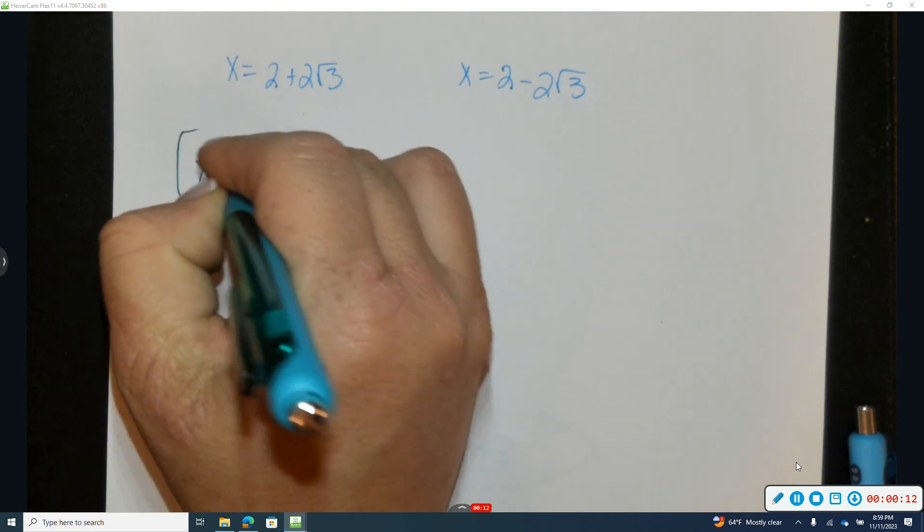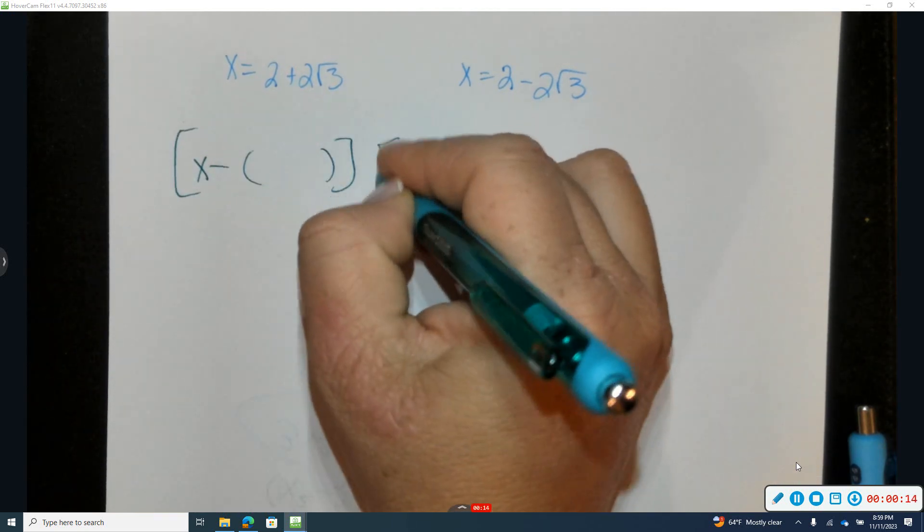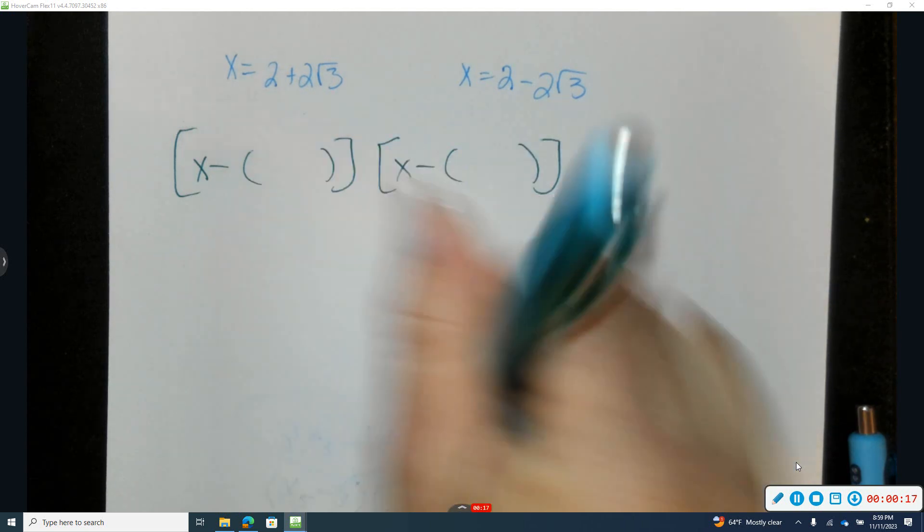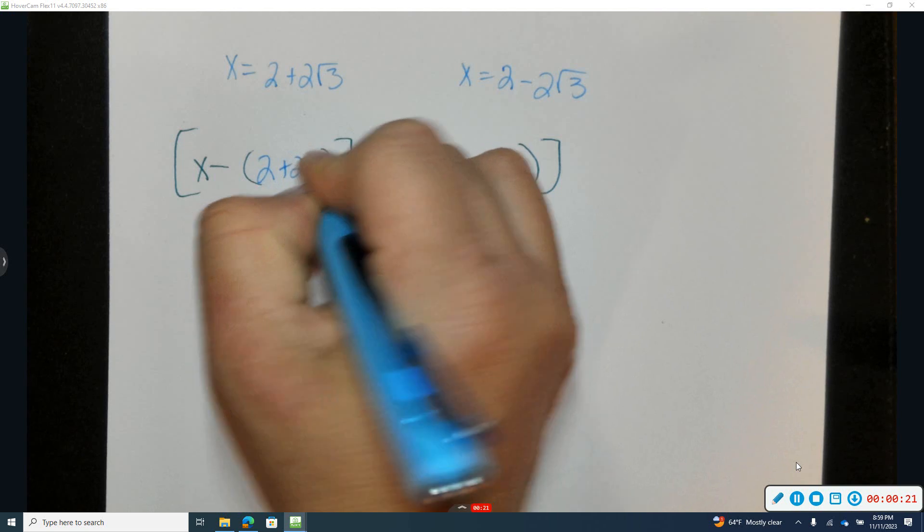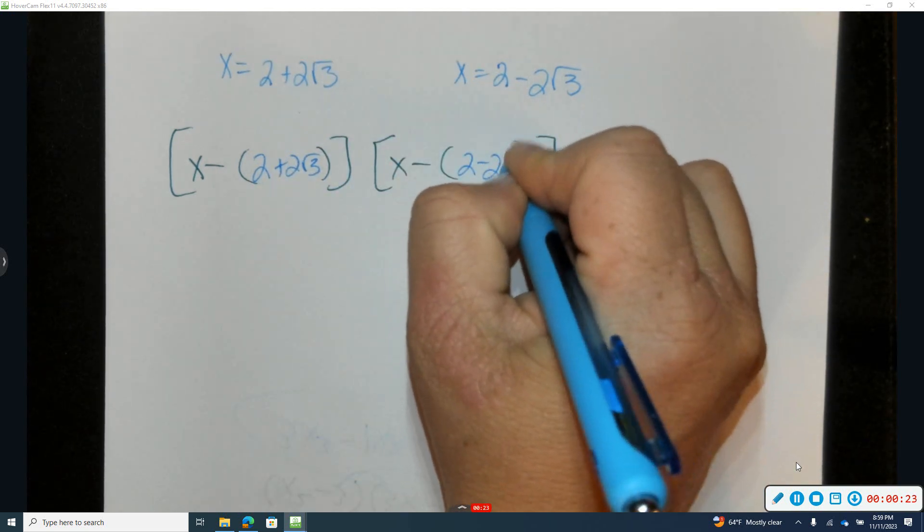So we have x subtract, x subtract. Now inside, I'm going to put in 2 plus 2 square root of 3, 2 minus 2 square root of 3.